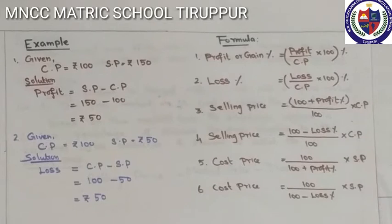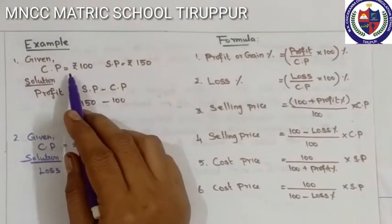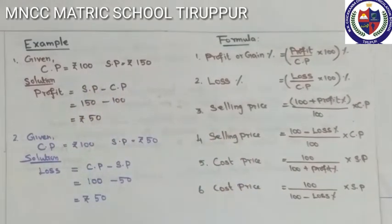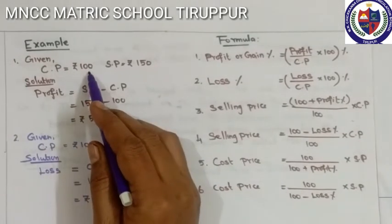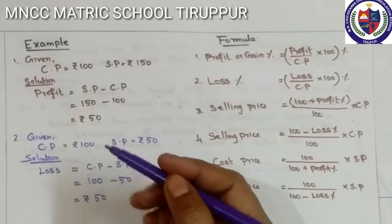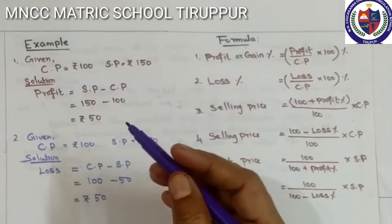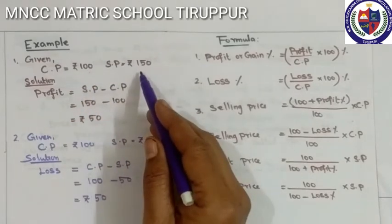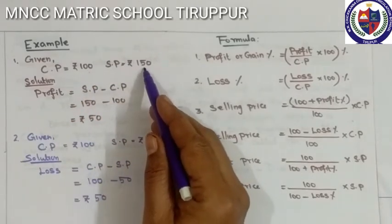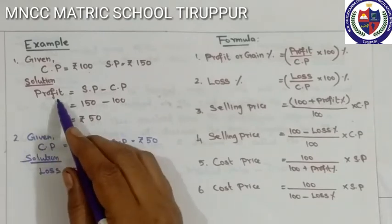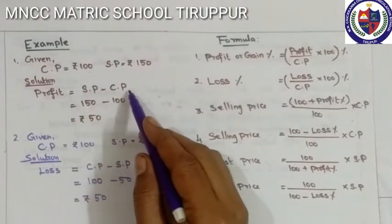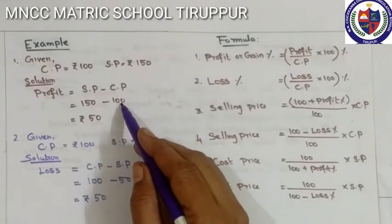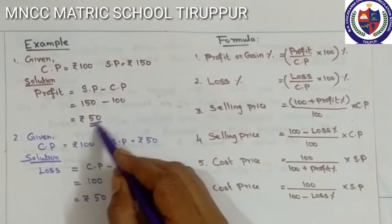Example one: Cost Price is 100 rupees, Selling Price is 150 rupees. We buy a new pen for Rs. 100, but we don't like the color, so we sold the pen for Rs. 150. Profit equals Selling Price minus Cost Price: 150 minus 100 equals Rs. 50 profit.